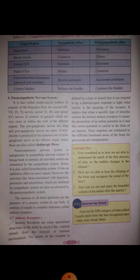The parasympathetic nervous system consists of ganglia which are very close to or within the wall of the effector organs. The preganglionic nerves are long and the postganglionic nerves are short.